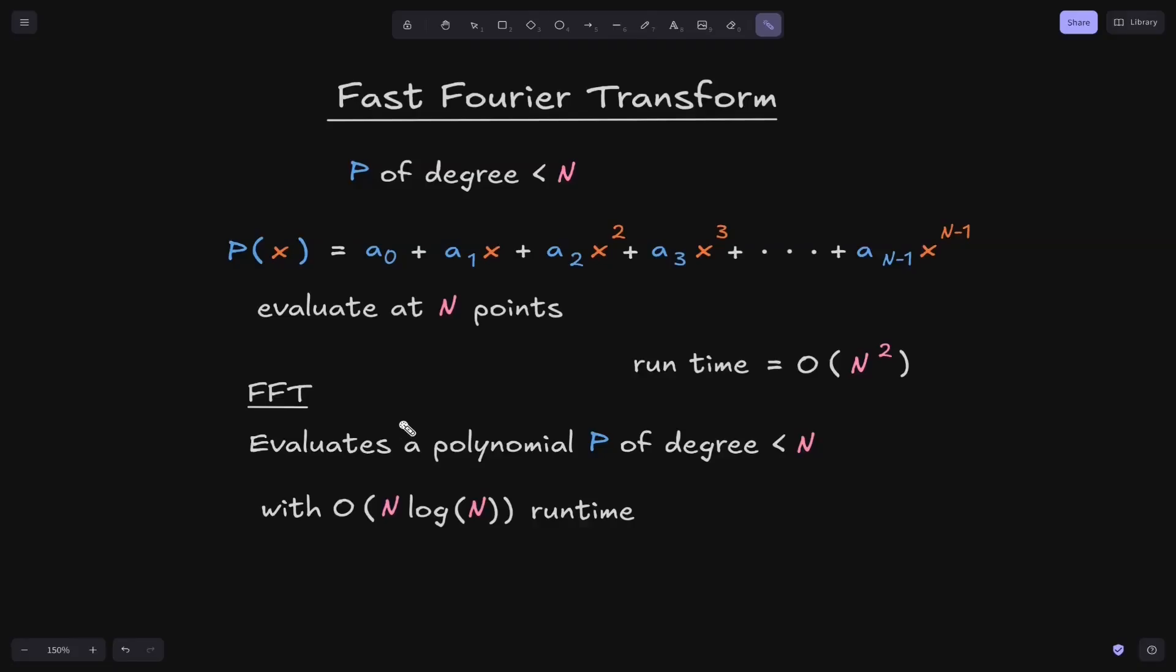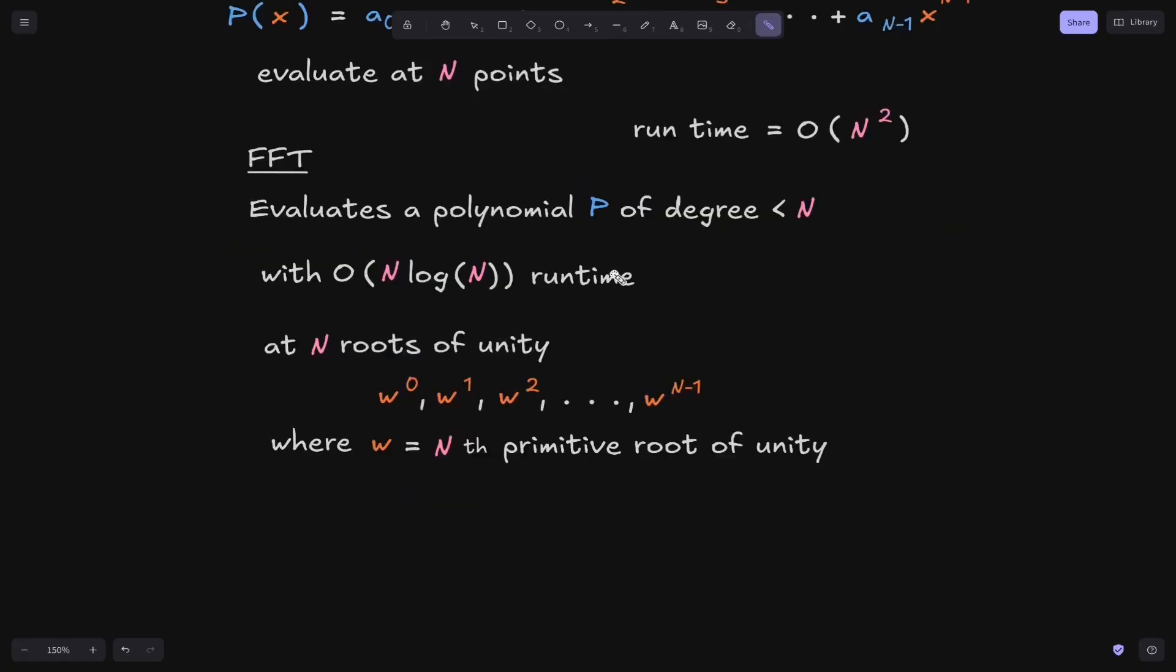Now here is where the Fast Fourier Transform comes in. The Fast Fourier Transform is an algorithm that evaluates a polynomial P of degree less than N with a runtime of O of N times log N. To achieve this O of N log N runtime, we cannot evaluate at any arbitrary N points. With FFT, we can only evaluate a polynomial P at specific points. The specific points that we need to evaluate the polynomial P using FFT are the Nth roots of unity.